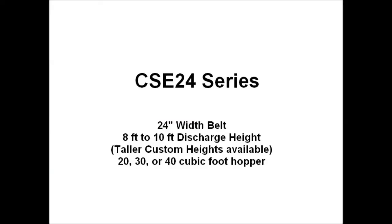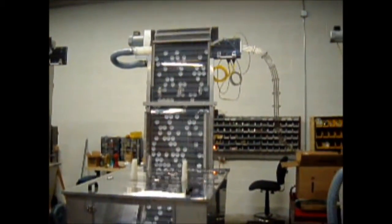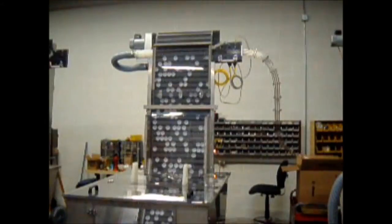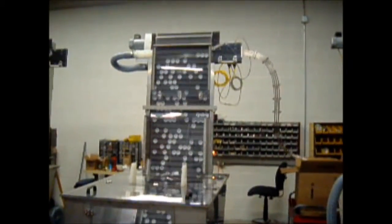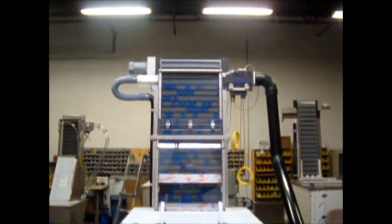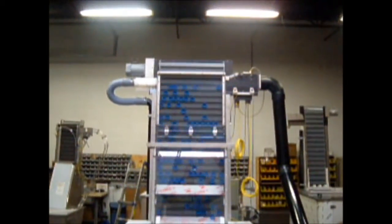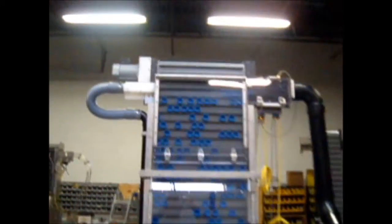The principle of operation of the larger belt size sorters is the same as the smaller ones. Obviously, the goal here is to achieve the fastest possible speed. As I mentioned earlier, these are available in 24, 30, and 36 inch width belts. We've made hoppers 20, 30, and 40 cubic feet storage capacity.